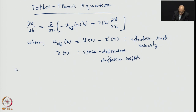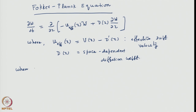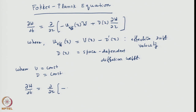However, when both u and d are constant — meaning not a function of x — the equation becomes simpler: d w by d t will be d by d x of minus u w plus d times d w by d x. Here, since d-prime is 0, u_effective becomes the same as u.